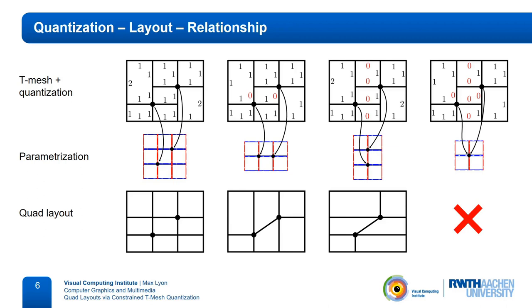So, the interesting question is now, which arcs can we set to zero without creating invalid parameterizations or layouts with low quality? In our algorithm, the layout quality is controlled by one parameter that specifies the maximum deviation a separatrix may have compared to its original trace direction.